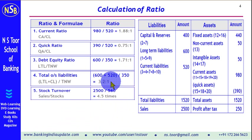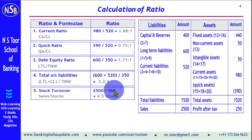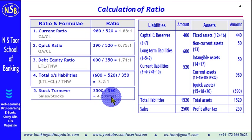Stock turnover ratio, also known as inventory turnover ratio, is calculated as sales divided by stocks. Sales are 2,500 and stocks are 560, giving a ratio of 4.5 times. This means there are 4.5 rotations of stock in one year relative to sales.